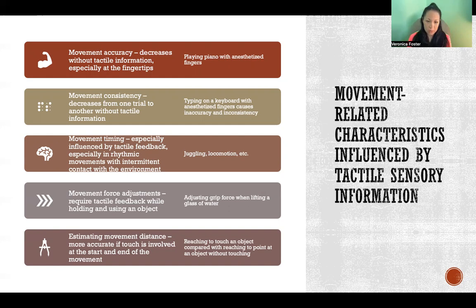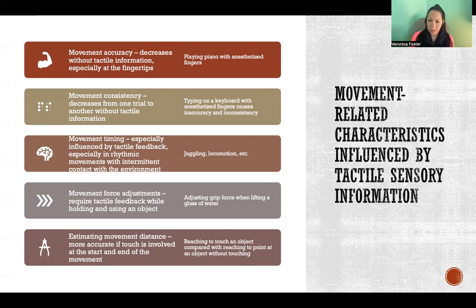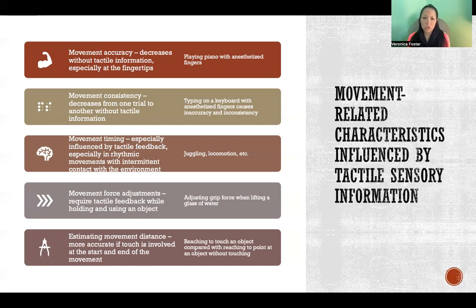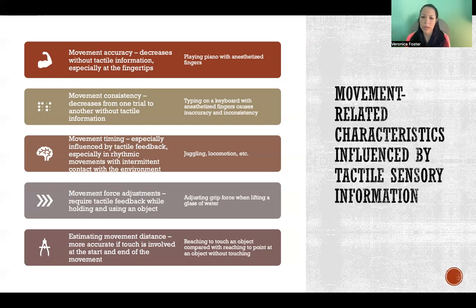Movement force adjustments — like in the example of lifting a glass of water from the table — we adjust the amount of force we apply based on tactile feedback coming from the fingers when we lift that glass. We don't know how hard to squeeze the glass or with how much force we need for elbow flexion or whatever the movement is. We have a hard time estimating the required force if we don't have tactile feedback about the movement and the object we're interacting with.